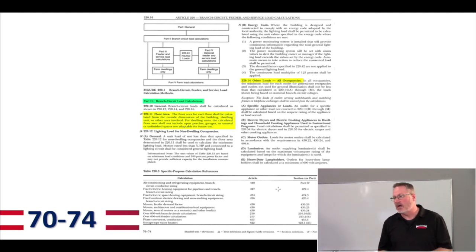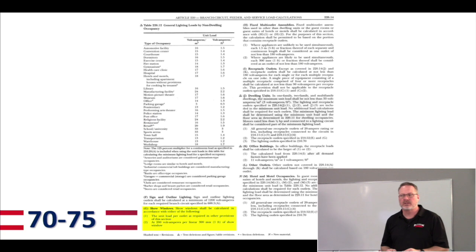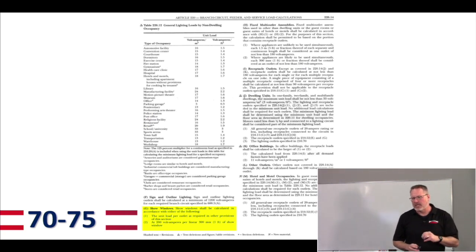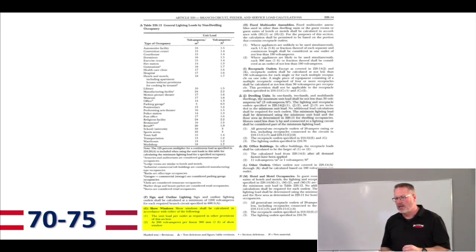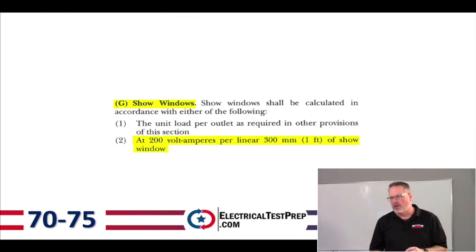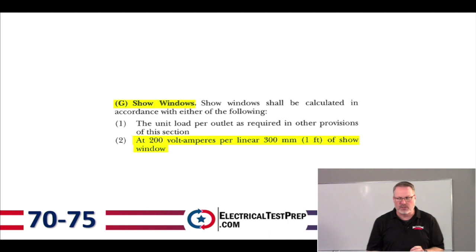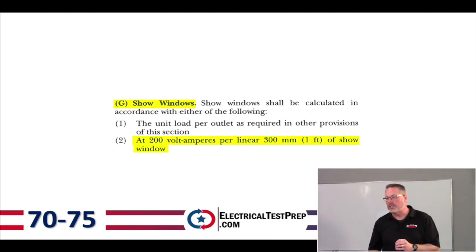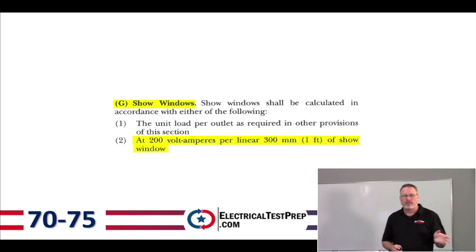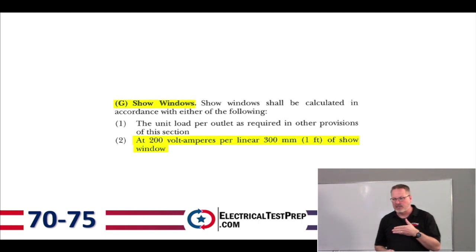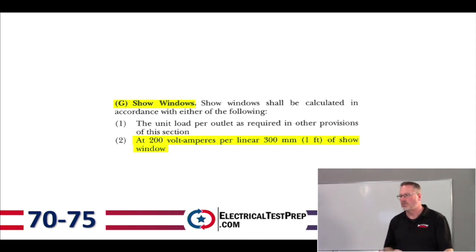On page 74, middle of the right-hand column, we've got 220.14, Other Loads, All Occupancies. Under letter G, Show Windows — there will be a question on the exam about show windows. The load is 200 volt-amps per linear foot of show window. For a 20-foot show window: 20 × 200 = 4,000 volt-amps.